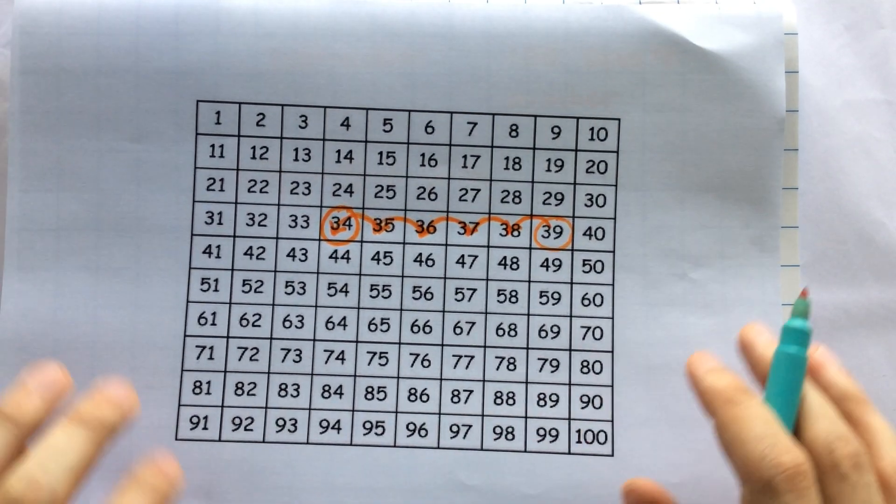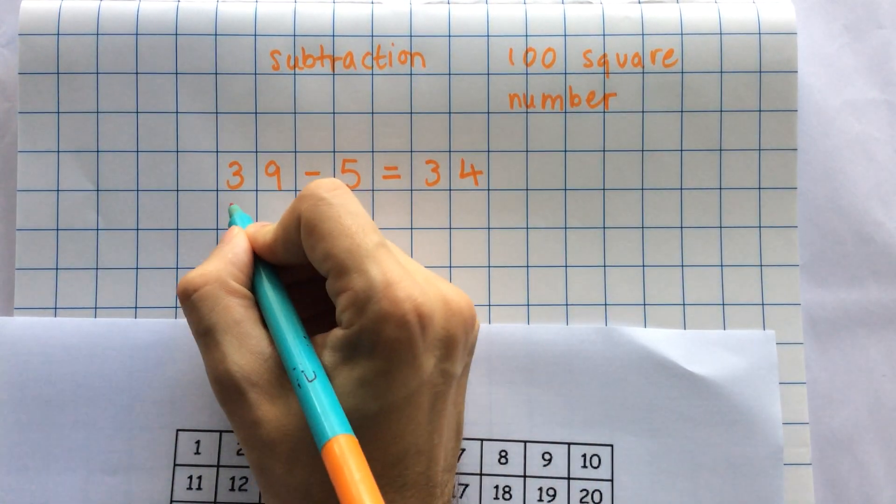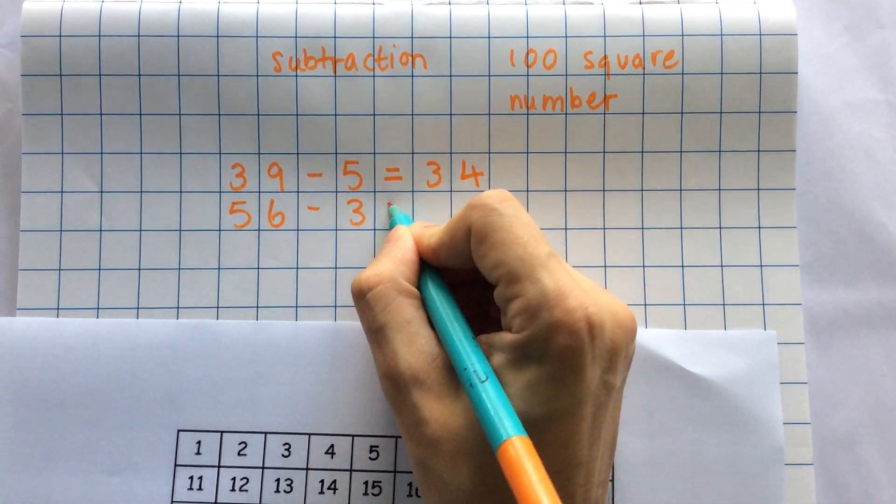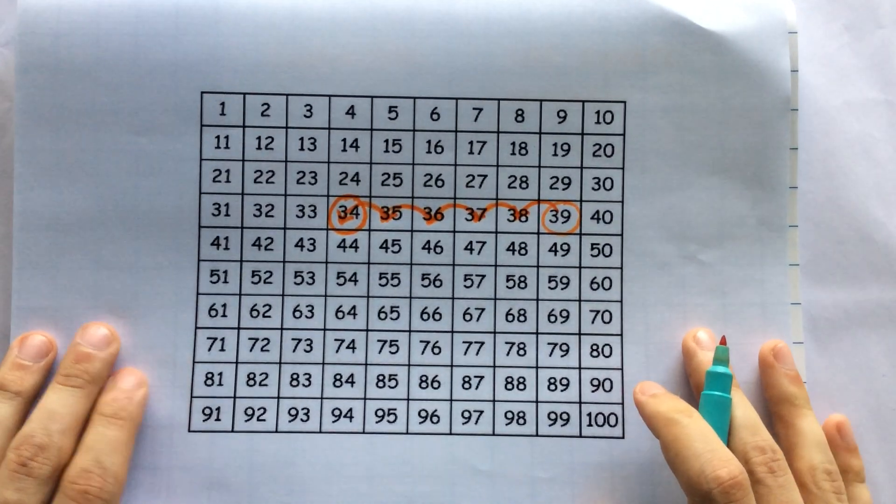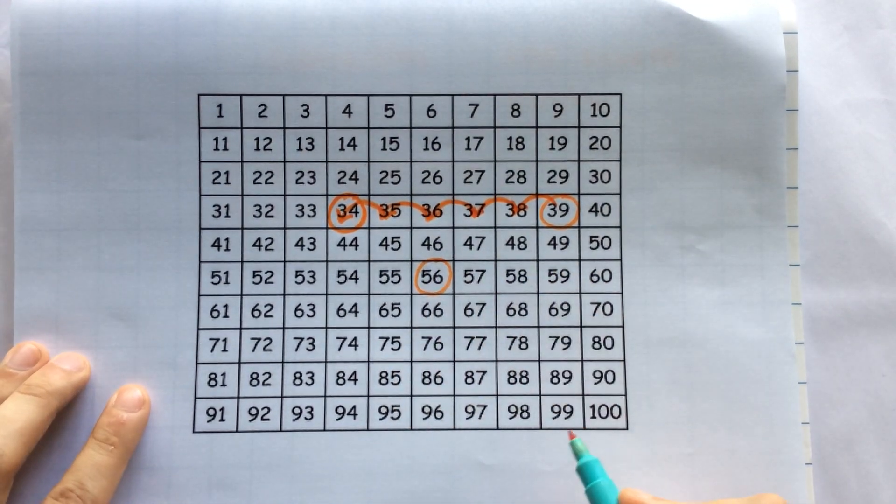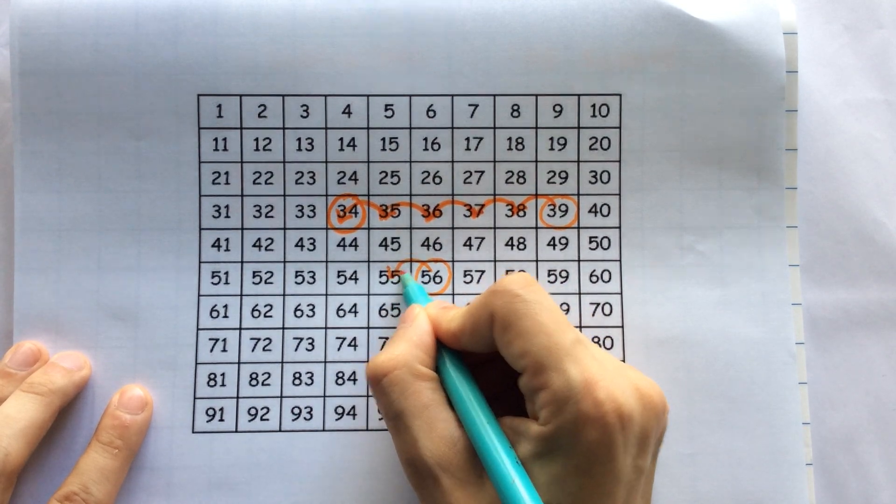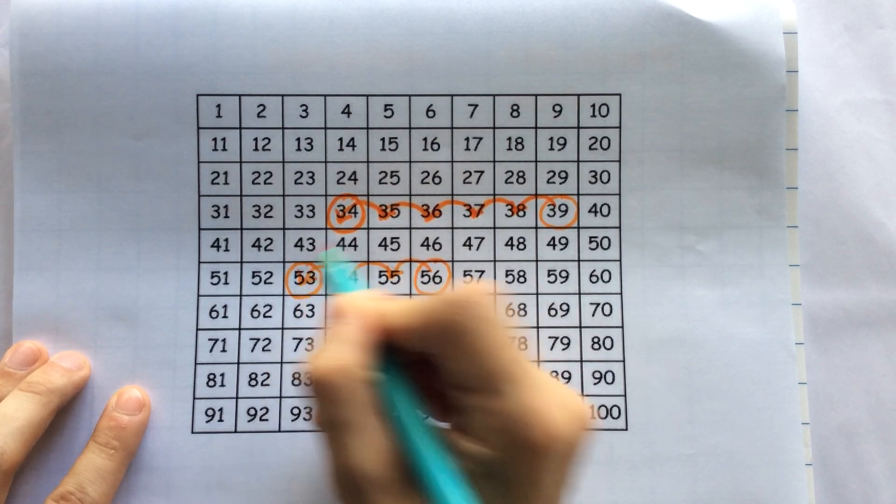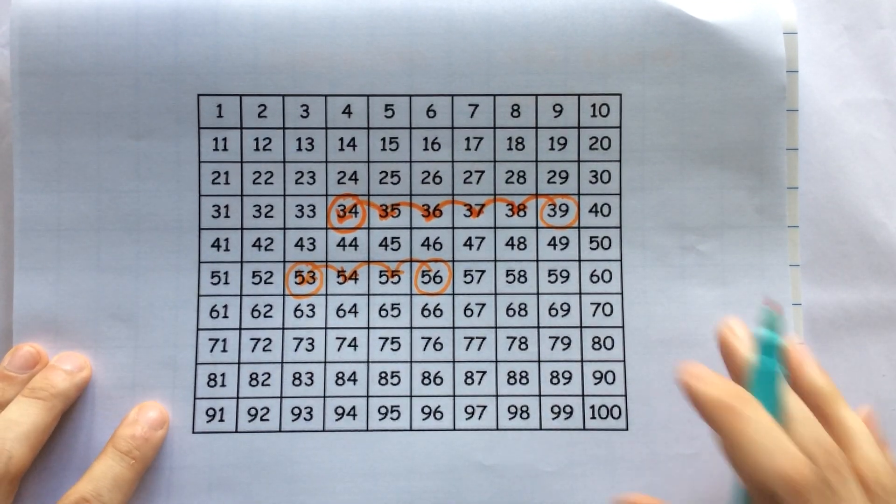Let's try another one. Let's try 56 minus 3. So I find 56 and I jump back 3. 1, 2, 3. And I circle my answer, 53.